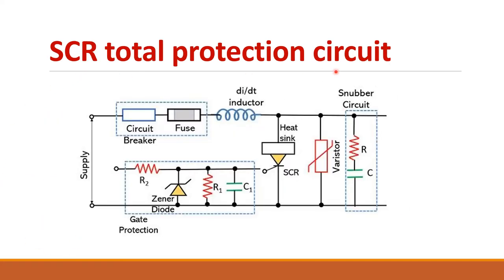This is the complete SCR protection circuit. Here is the SCR. To maintain temperature, a heat sink is used — the SCR is placed on the heat sink so that generated heat is dissipated. A varistor is used for overvoltage protection, and a circuit breaker and fuse are used for overcurrent protection. The inductor is for limiting dI/dt and the snubber circuit is for dV/dt protection.